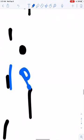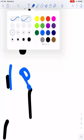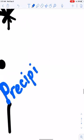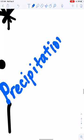P, I'm going to make this a little, R, E, C, pre, sip, I-P, I, T, A, T, and precipitation.